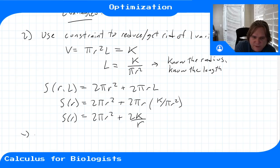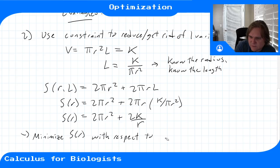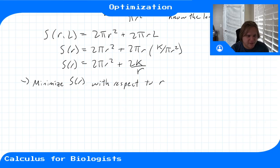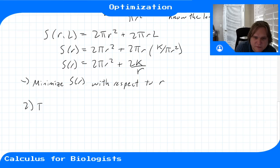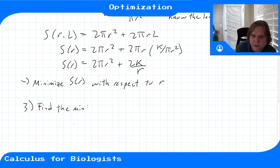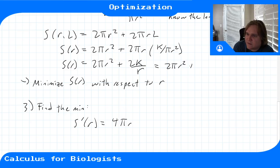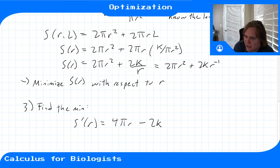We want to minimize S(r) with respect to r. To find critical points, we compute S'(r). The derivative of 2πr² is 4πr by the power rule. Writing 2K/r as 2K·r⁻¹, the power rule gives −2K/r². So S'(r) = 4πr − 2K/r².